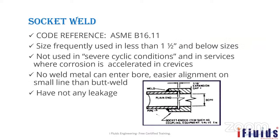Socket weld is frequently used for 1.5 inch and below sizes. Here, the pipe is inserted inside the fitting or flange and only fillet weld is performed on the outside. A small gap is maintained inside the socket for thermal expansion — so the pipe can expand without cracking the weld area during fluid transfer.